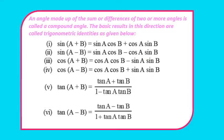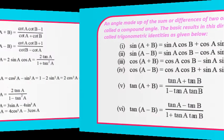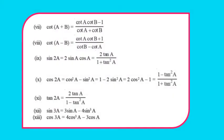Pause and note down these identities. Next: cot(A+B) = (cotA cotB − 1)/(cotA + cotB). And cot(A−B) = (cotA cotB + 1)/(cotB − cotA).